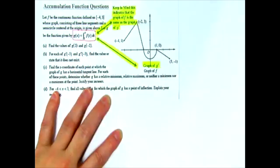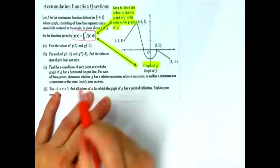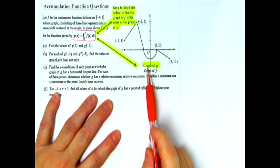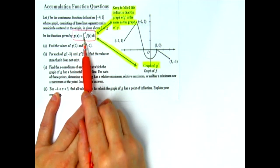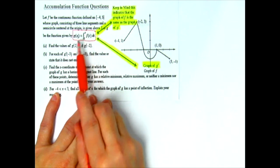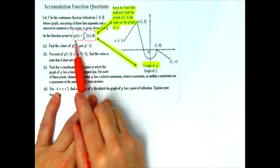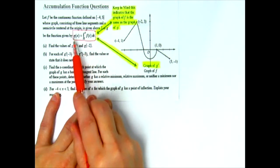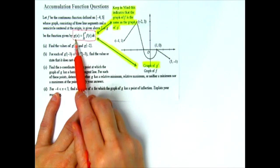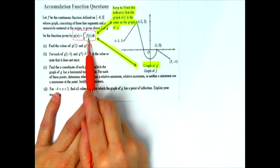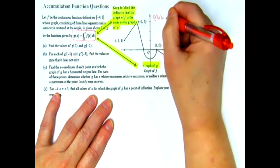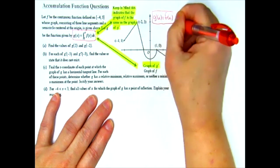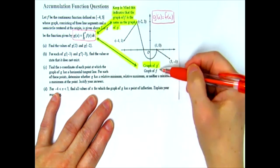In the directions for an accumulation function, you'll see something very similar to this. If you can read this and understand what it means, you can conclude that the graph of f is also the graph of g prime. We integrate the derivative to get back the original function — they're inverse operations. So if the original function is g, then f must also be called g prime. On the AP test, you want to write somewhere that g prime of x equals f of x.